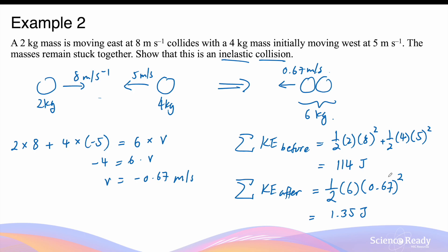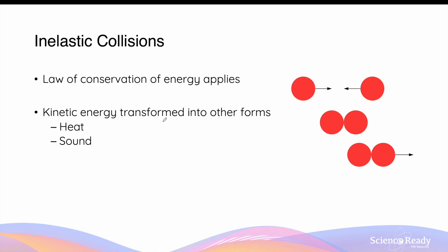You might wonder where this energy has gone. When objects collide, they can produce sound, so energy can be transformed into sound or acoustic energy. The collision can also produce heat, so some of the 114 J may have been transformed into heat energy. In inelastic collisions, the law of conservation of energy still applies — the total energy before the collision, regardless of form, still equals the total energy after. Kinetic energy is not conserved because it has been transformed into other energy forms such as heat and sound.